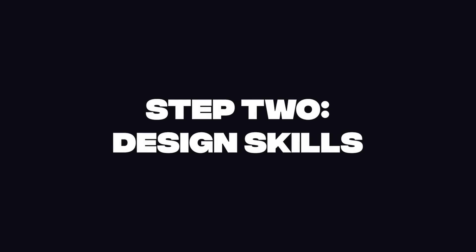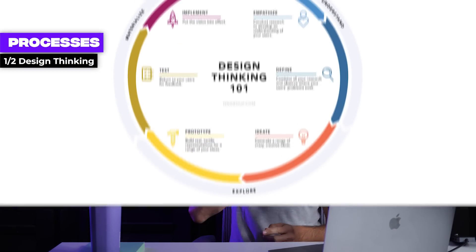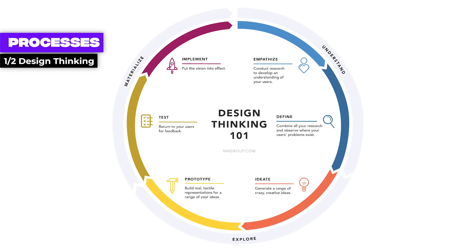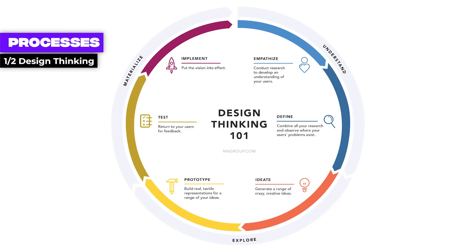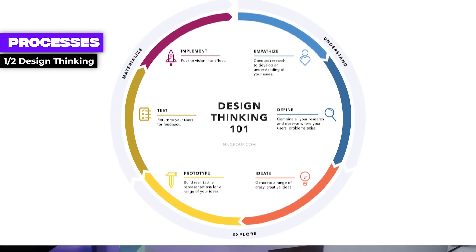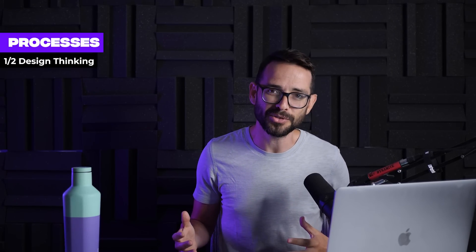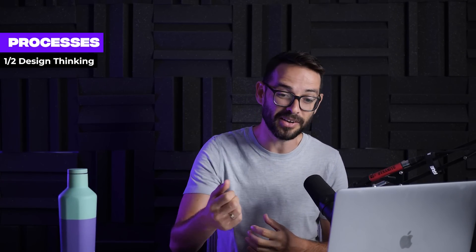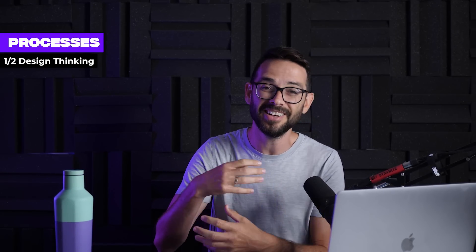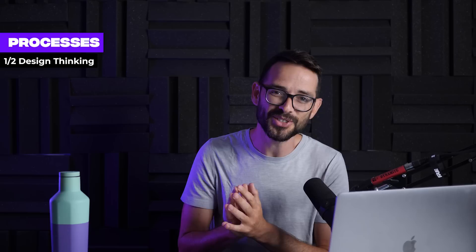The next step is acquiring some design skills, which will guide what you want to create with the software you've learned. There are two processes you need to understand. The first is design thinking — an iterative process where you first understand the people you're designing for, then define the problem, ideate a bunch of ideas, turn them into a prototype, and test with users. You'll get feedback that guides the next iteration. Design is never actually finished; every time you ship something, it's just a new version to test, and then you start the process from scratch.